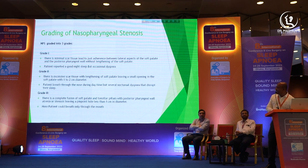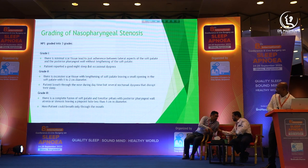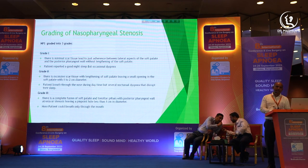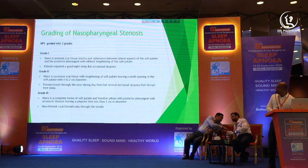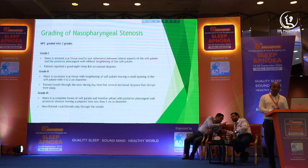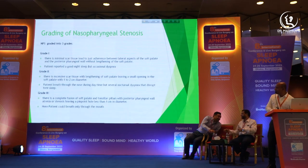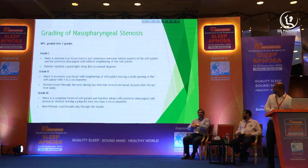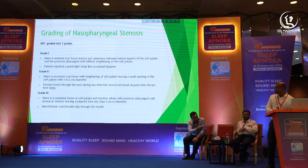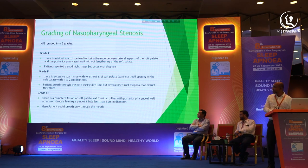In Grade 2, there is excessive scar tissue with lengthening of the soft palate, leaving a small opening of 1 to 2 cm diameter. The patient breathes through the nose during daytime but experiences severe nocturnal dyspnea that disrupts sleep. In Grade 3, there is complete fusion of the soft palate and tonsillar pillars with the posterior pharyngeal wall — atresia or stenosis leaving a pinpoint hole less than 1 cm — and the patient can breathe only through the mouth.